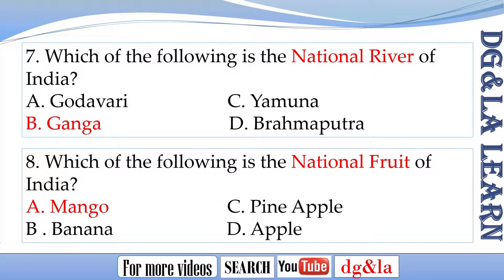Question 7 answer: The national river of India is B. Ganga. Question 8 answer: The national fruit of India is A. Mango.